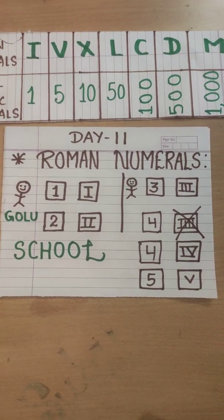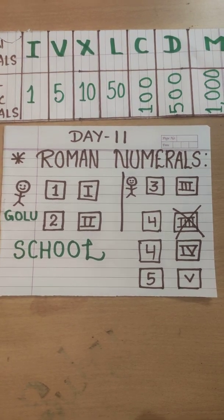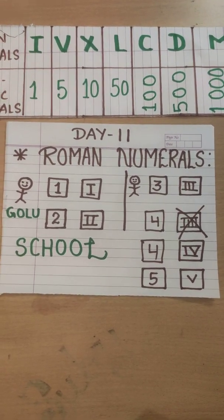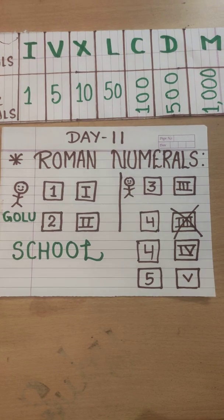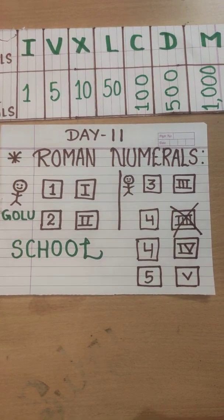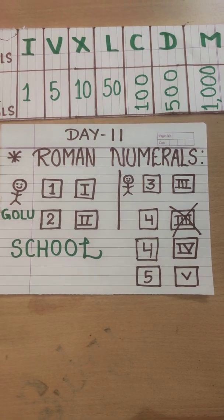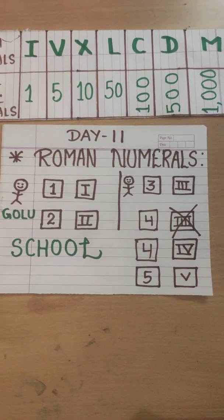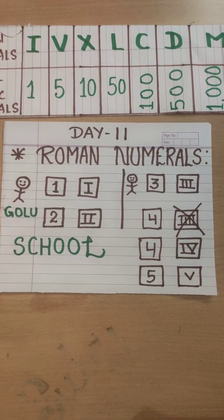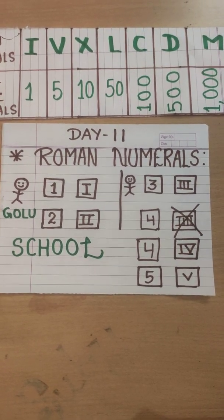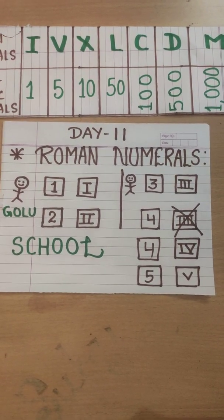He went to his class teacher and asked that how about these symbols? First of all, why these symbols are written instead of simple numbers? And why 4 was not written as 4 times I? Then his teacher explained him that the numbers which are written in numerals form 1, 2, 3, 4,